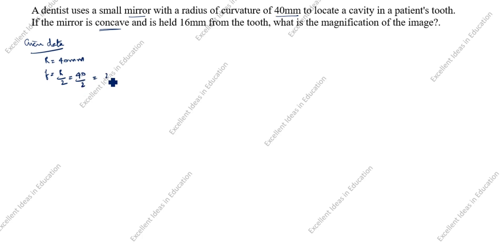This is concave, concave means always negative for focal length. To locate a cavity in a patient's tooth, if the mirror is concave and is held 16 mm from the tooth, so from the tooth means u is given as object. Object is always negative for lens and mirror, so minus 16 mm.